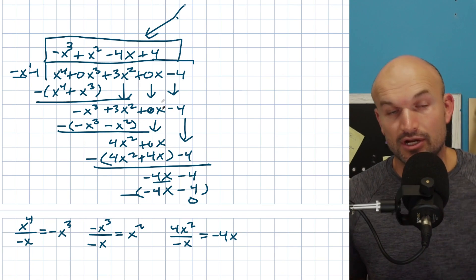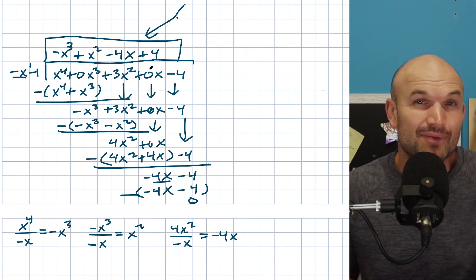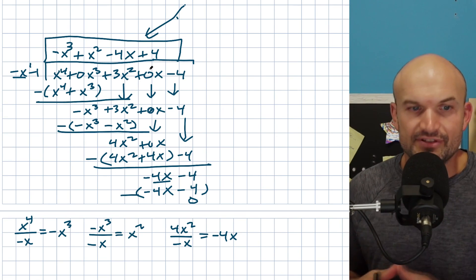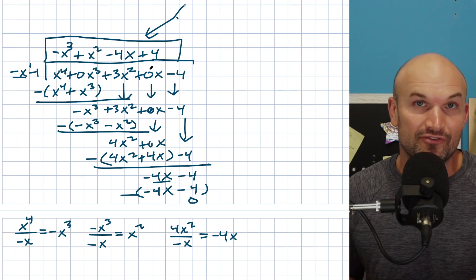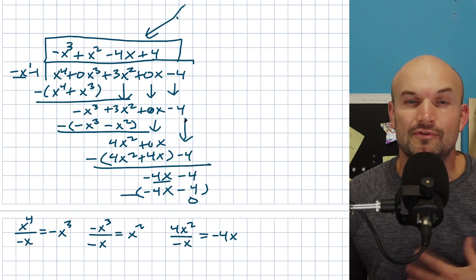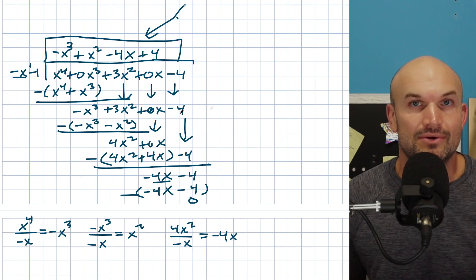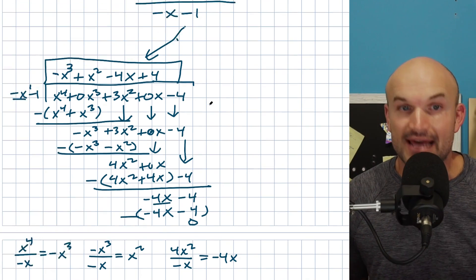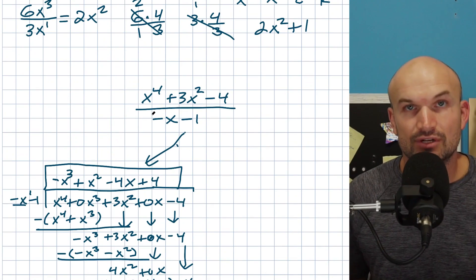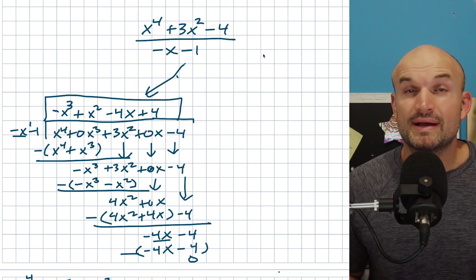Negative x goes into negative 4x four positive times. Four times negative x is negative 4x, and 4 times negative 1 is negative 4. These are exactly the same, so subtracting gives zero. That's the complete long division. You can see in a problem like this, long division takes a very long time.